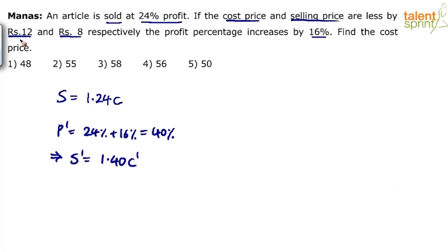The cost price and selling price are less by rupees 12 and rupees 8 respectively. So cost price has been reduced by 12, selling price has been reduced by 8. So the new selling price S' is original selling price S minus 8, equals to 1.4 times the new cost price C' which is the original cost price C minus 12.